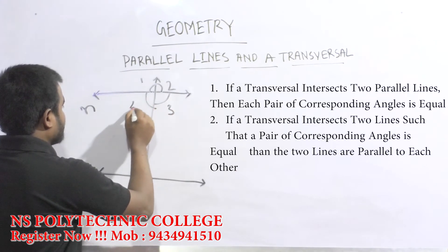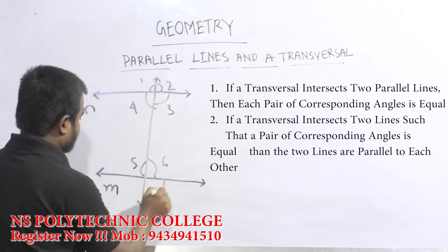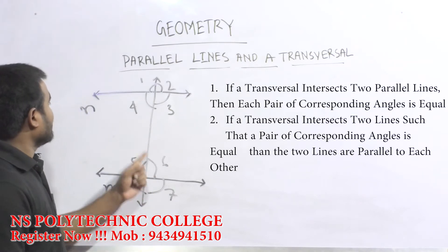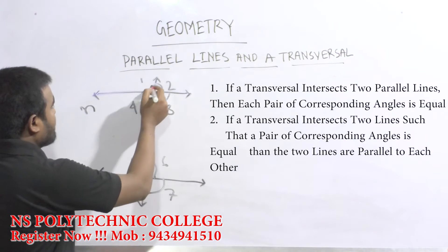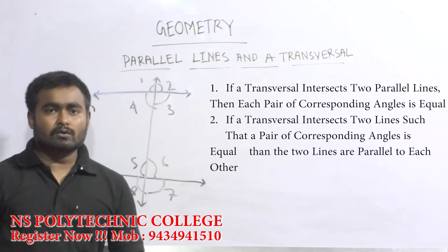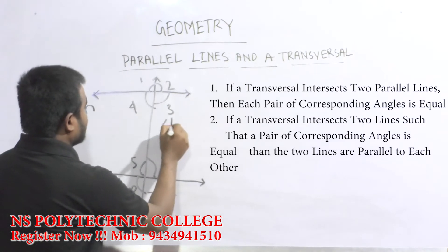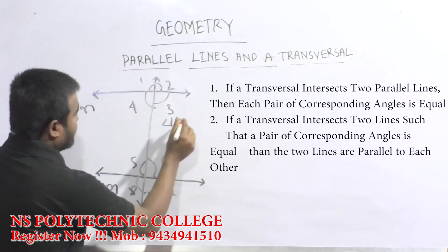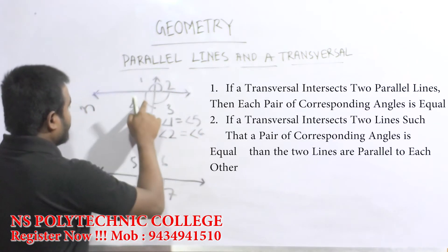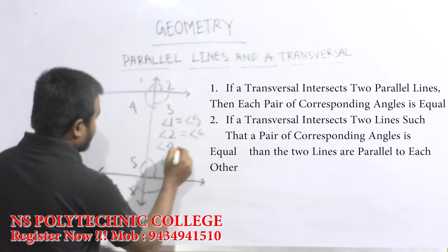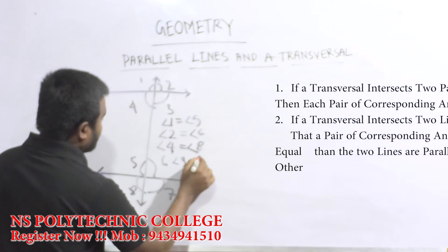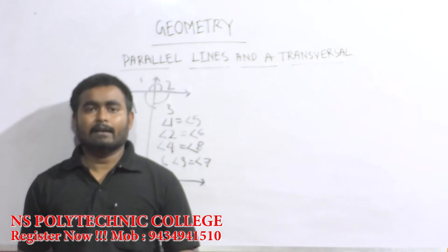इसका angle का नाम दे दो। तो हम लोगों के पास total angle बन गए। Corresponding angles are equal मतलब — दो parallel line हैं, एक transversal intersect करेगा, तो corresponding angle equal होता है: angle 1 = angle 5, angle 2 = angle 6, angle 4 = angle 8, angle 3 = angle 7। तो यह formula बोल रहे हैं कि corresponding angle सब equal होते हैं।